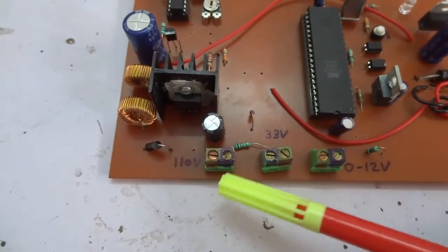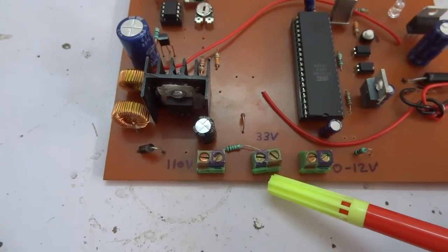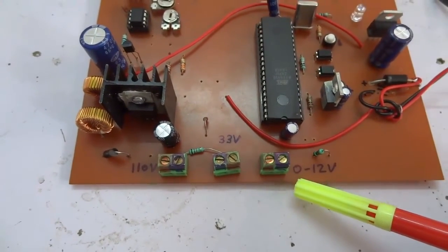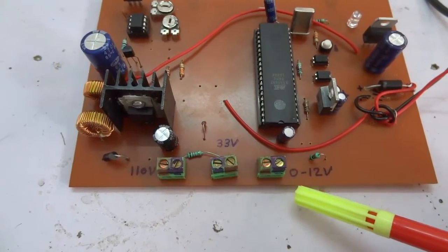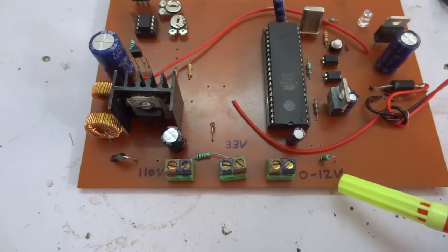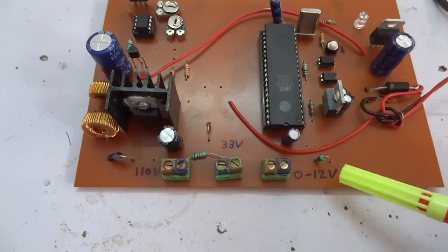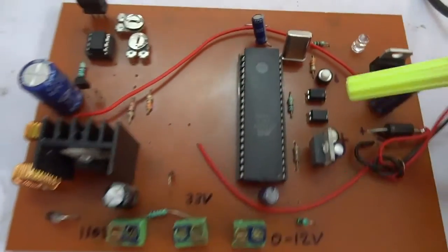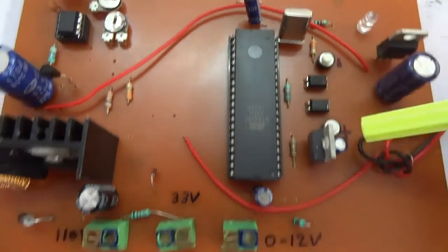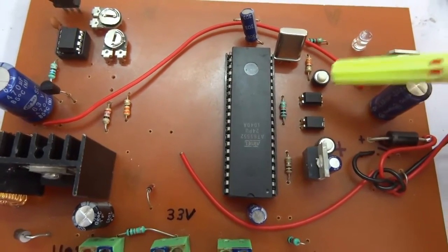Here 110V and 33V are constant and at this point we have 0-12V variable voltage which can be controlled by these two switches. One is to increase the voltage and second is to decrease the voltage.